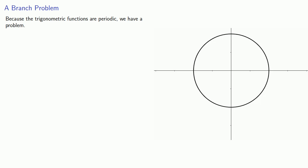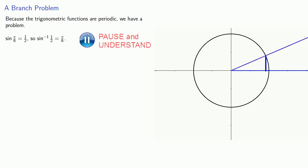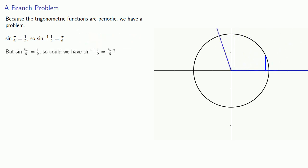Because the trigonometric functions are periodic, we have a problem. For example, sine of pi/6 is equal to 1/2, so inverse sine of 1/2 should be pi/6. But sine of 5pi/6 is also 1/2, so could we have inverse sine of 1/2 equals 5pi/6?